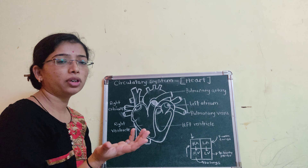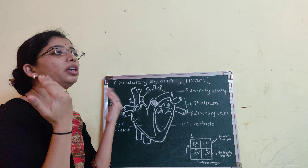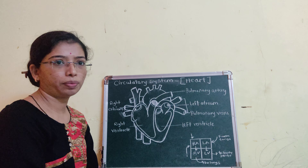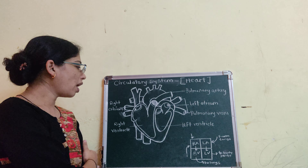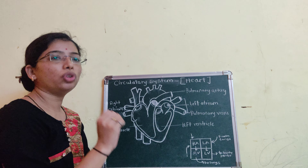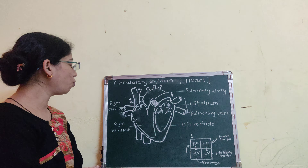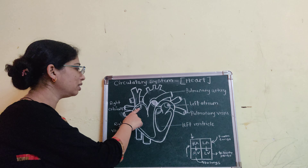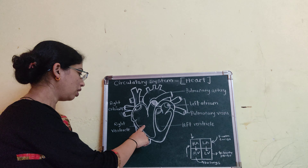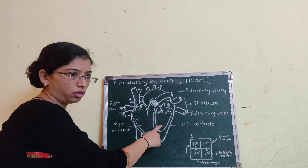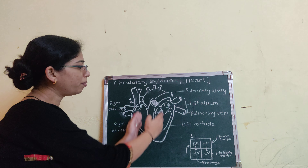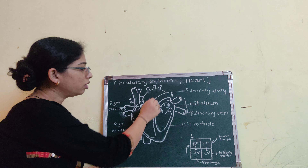Where is the heart situated? The heart is situated to the left side of your body, in a chest cavity inside the ribcage. What is the function of the ribcage? The ribcage protects the heart from outer injury.